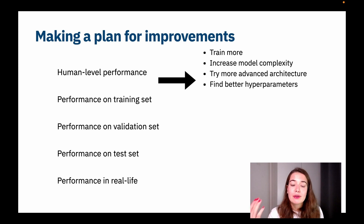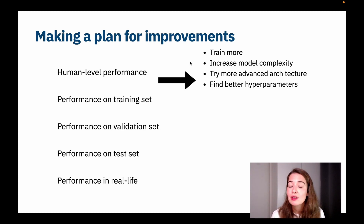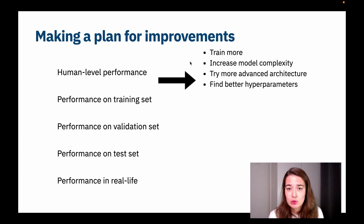If we are failing to get close to the training human level performance based on our training performance — so if we decide to lower the bias — what we can do is train the model for more epochs, increase the model complexity by adding more hidden layers or more neurons in those layers, or completely change the architecture of the model and try something different like an RNN or CNN. Or maybe we just need to do more hyperparameter tuning and look for better hyperparameters.